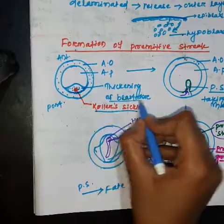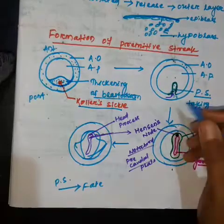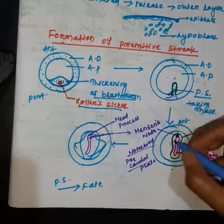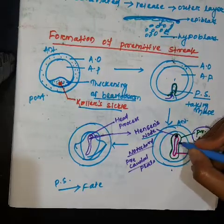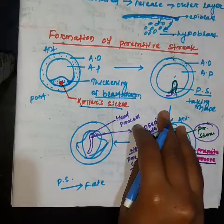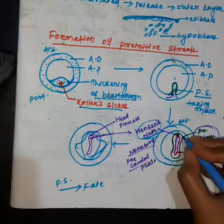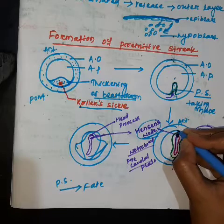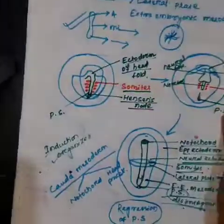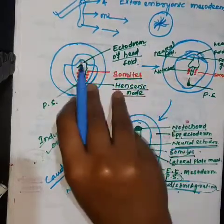Thickening of the blastoderm layer forms the primitive streak. This primitive streak then moves to the center of the embryo and moves anteriorly, giving rise to different parts like Hansen's node at the anterior side. Centrally, a groove-like structure — the primitive groove — is present. The primitive streak continues to elongate, pushing Hansen's node posteriorly. When elongated, different parts of the primitive streak continue to develop.